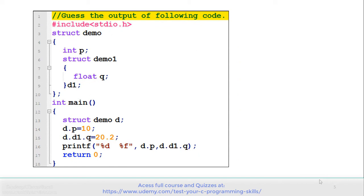Let's move to the next example. See the code carefully and gauge the output. In the program there is a demo structure whose definition starts from line number 3. In demo structure there is a member p and one more structure demo1, and there is a d1 variable of demo1 structure. In the main function, variable d of demo structure is declared. The value of member p is initialized to 10 at line number 14, and d.d1.q is equal to 20.2 at line number 15. Finally it displays the values at line number 16. The output of this program is 10 and 20.2.